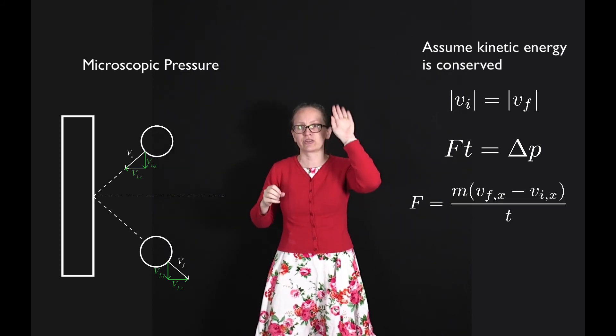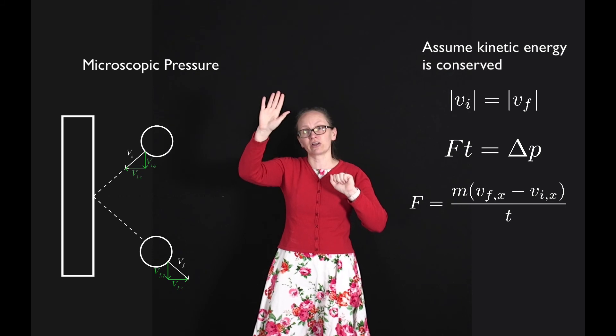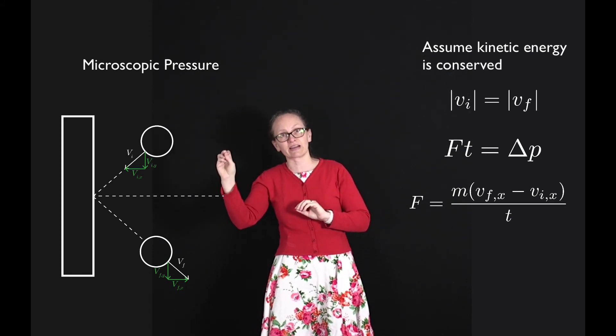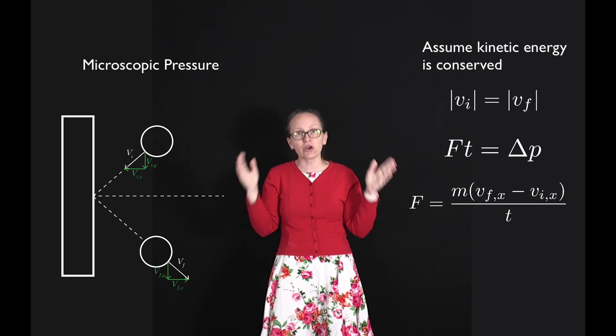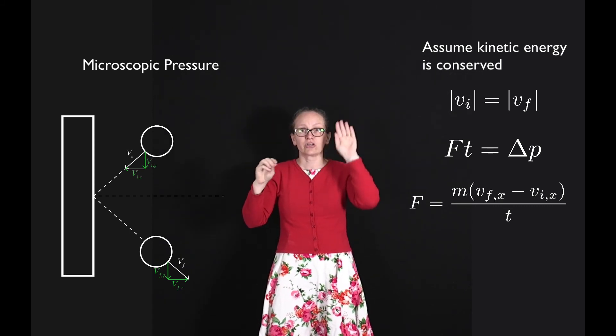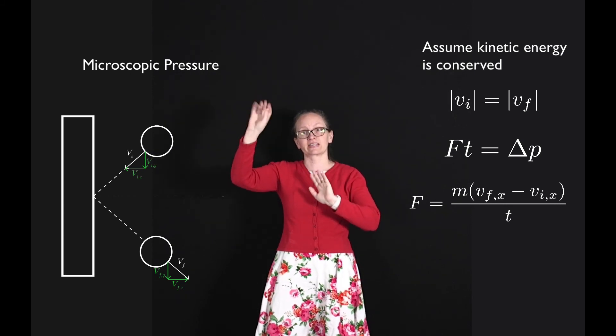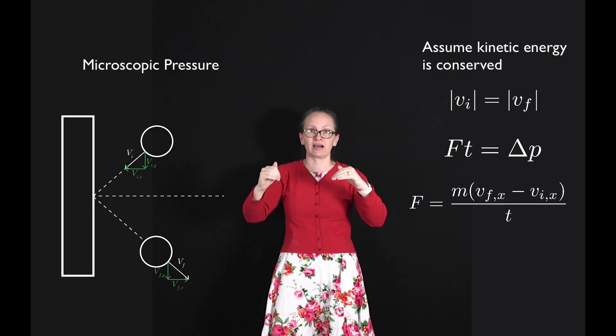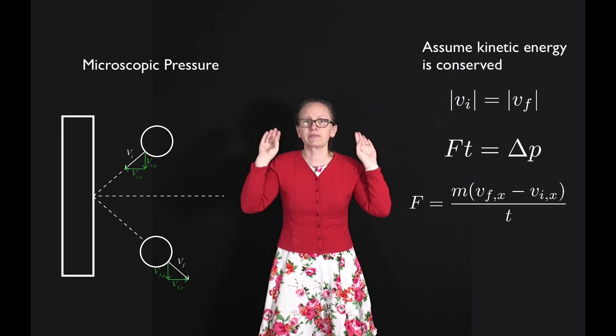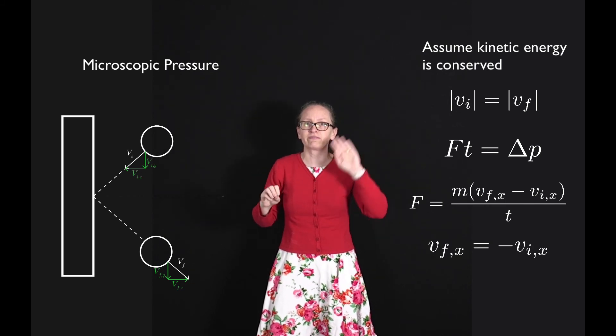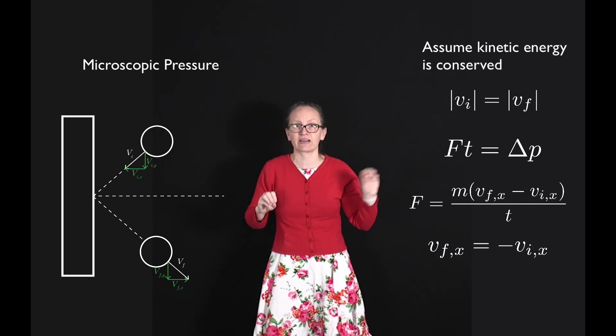And in this case, we only need to consider the final velocity in the x direction because we've said that there's no change in the velocity in the y direction. So we've got this is equal to the mass times the final velocity in the x direction minus the initial velocity in the x direction divided by time.